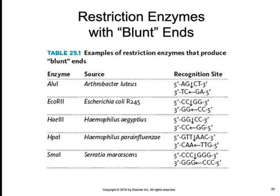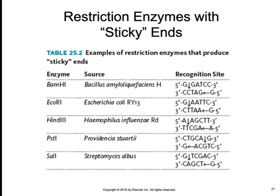Examples of restriction endonucleases with blunt ends include ALU1, EcoR2, HbA3, HbA1, and SMI1 — no overhangs, requiring a ligase to seal fragments directly. Examples producing sticky ends include EcoR1, BamH1, HindIII, PST1, and SAL1. With sticky ends, compatible overhangs hybridize to each other, making it more likely those DNA fragments will attach; you then seal them with DNA ligase. All of these can be used as molecular tools.